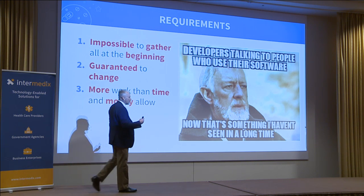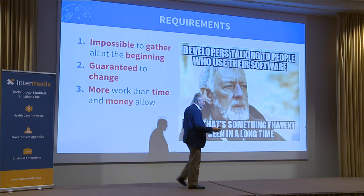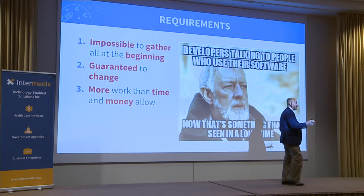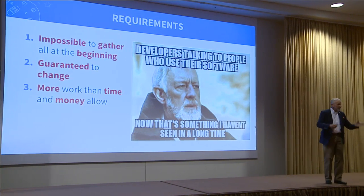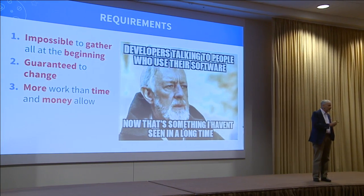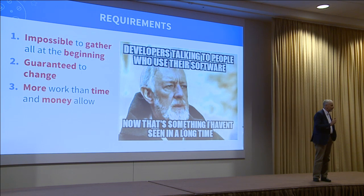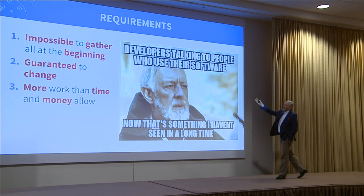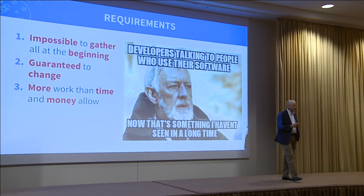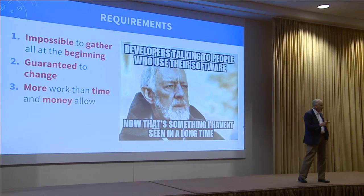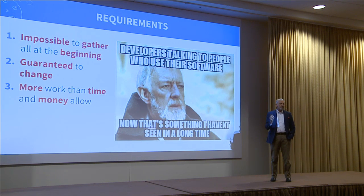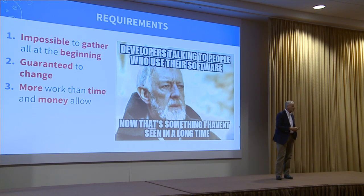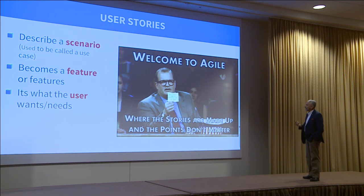Requirements will always be incorrect. Agile gives us a way to mitigate the risk of building the wrong thing — running down and doing something for nine months and going, oh well, that airplane needs two wings instead of one. It's impossible to get them all right at the beginning. They will change during the process, and there will be more requirements than time and money can deliver. You get the business to choose how they want to spend their money.